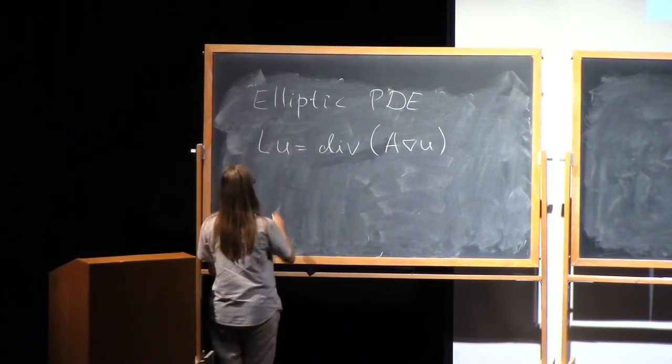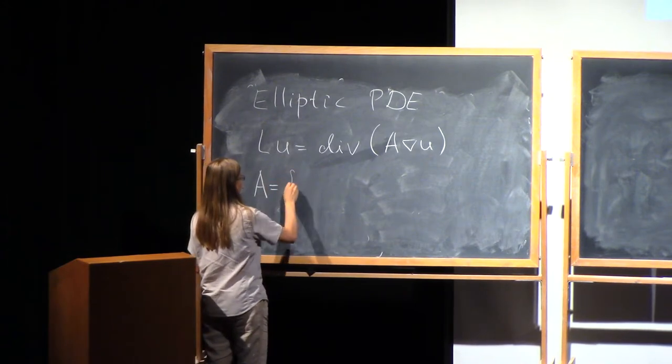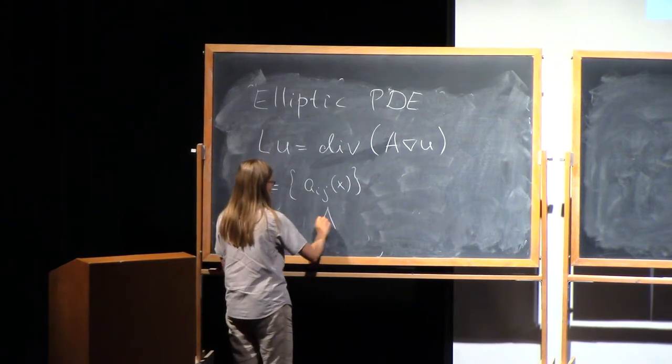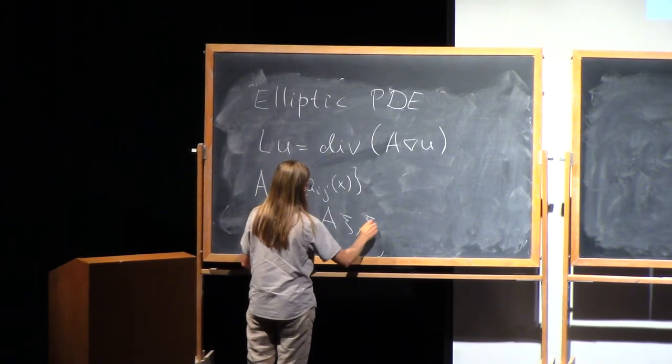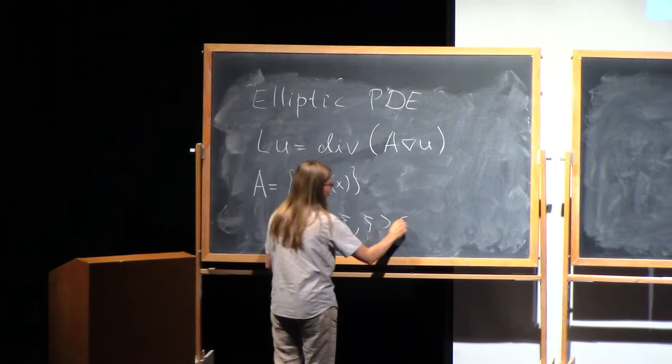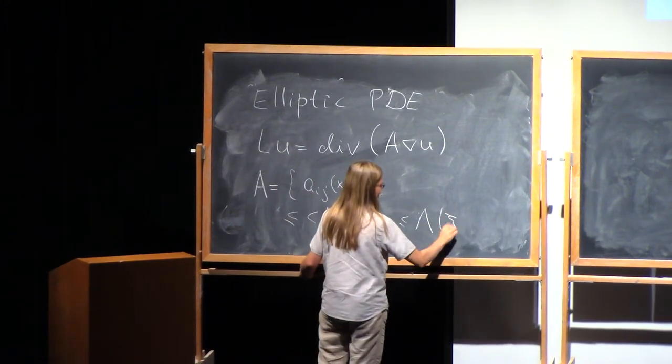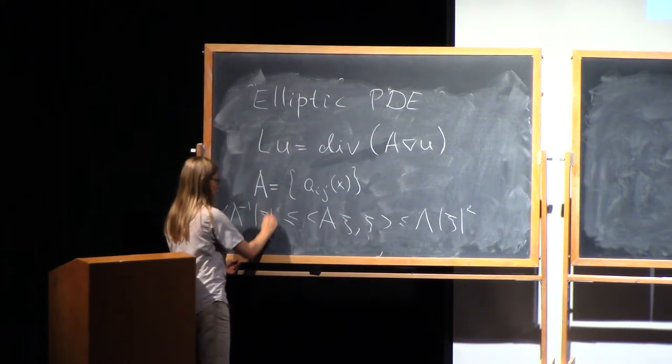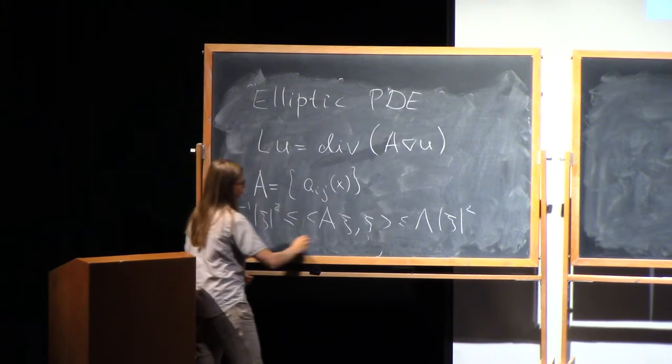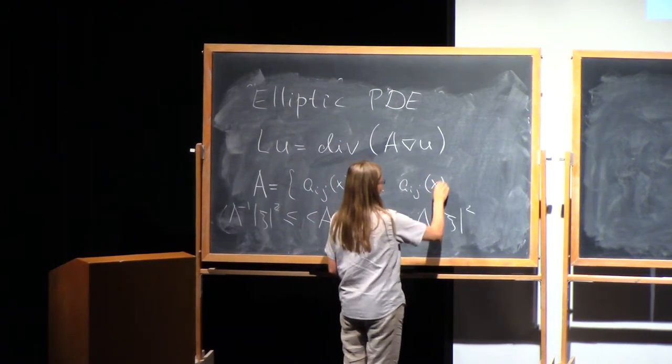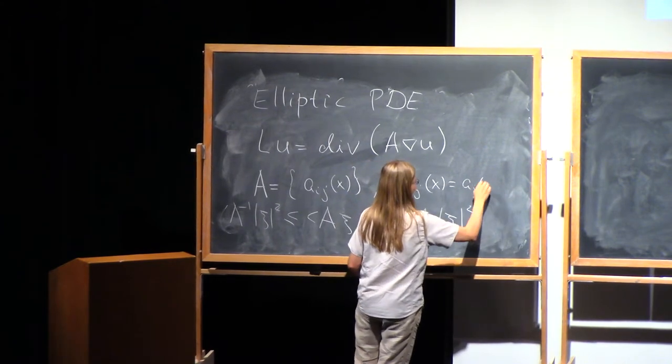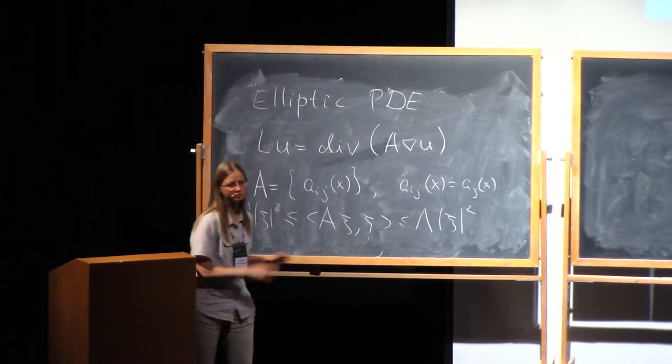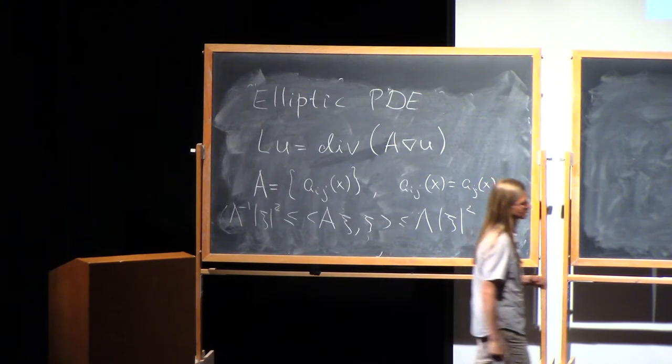By uniformly elliptic, I mean that we have a matrix of coefficients with usual condition that this is an elliptic operator. The matrix is always symmetric. And uniformly elliptic will mean that I have the same lambda for the whole domain where I'm considering the equation.